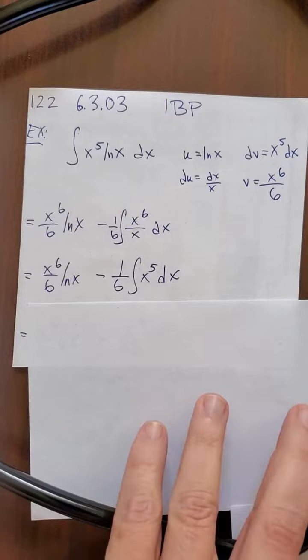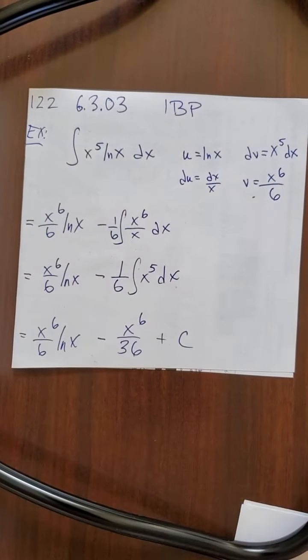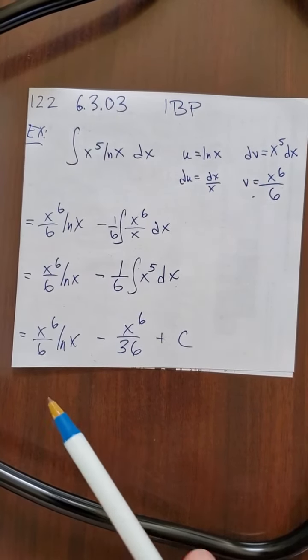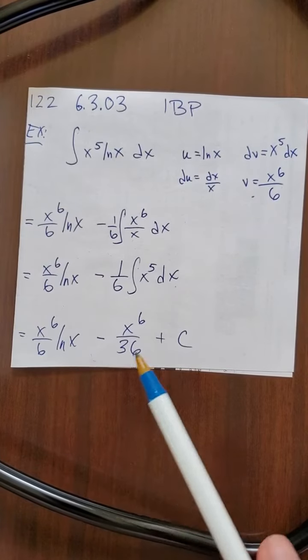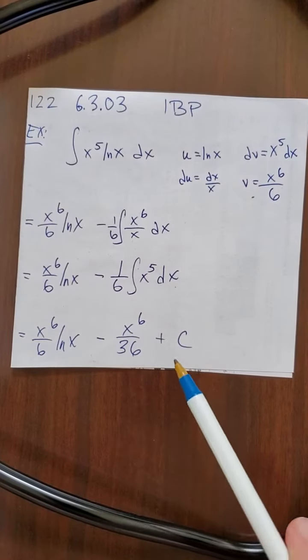And now the integral of this is very simple: x to the 6th over 6 ln x minus x to the 6th over 36 plus c.